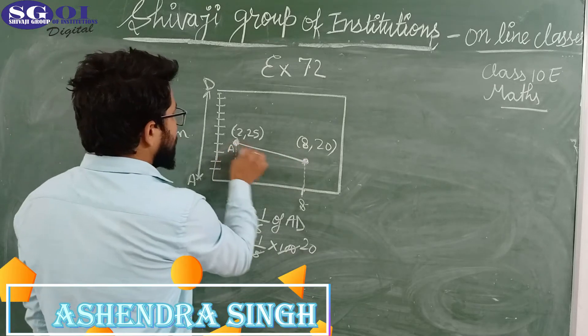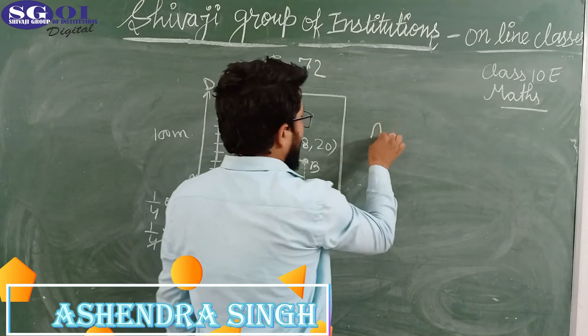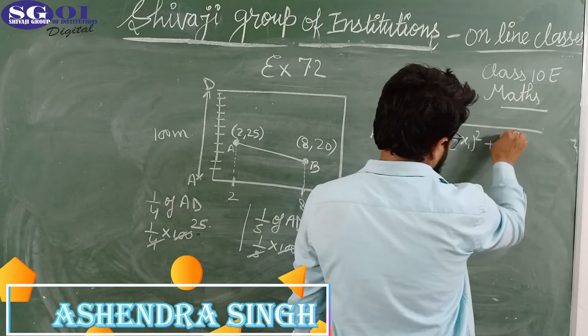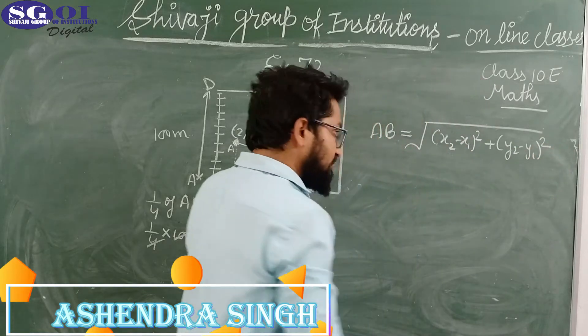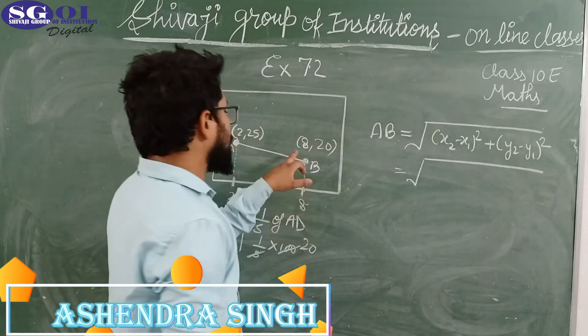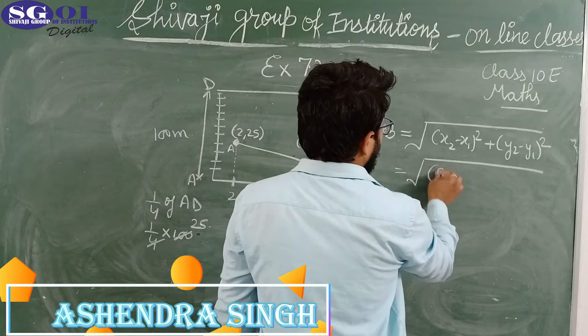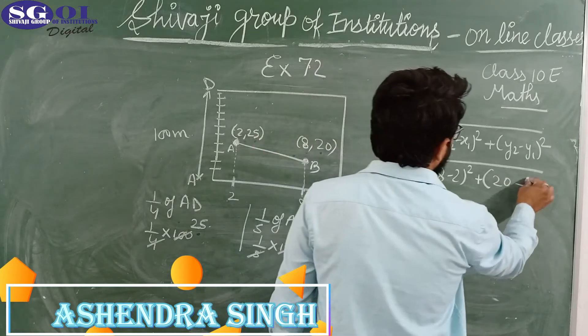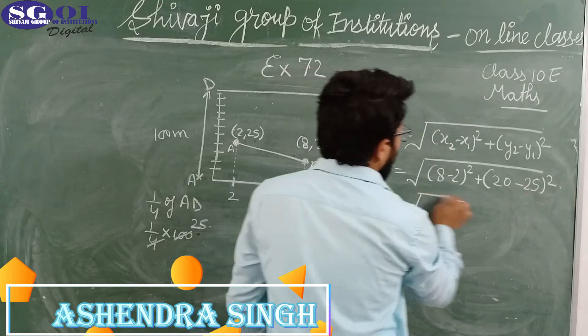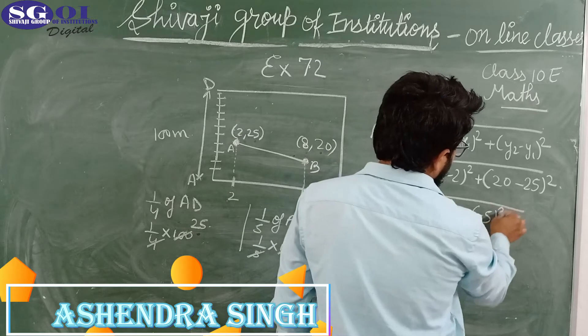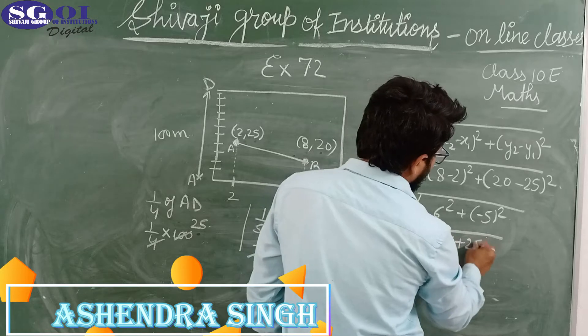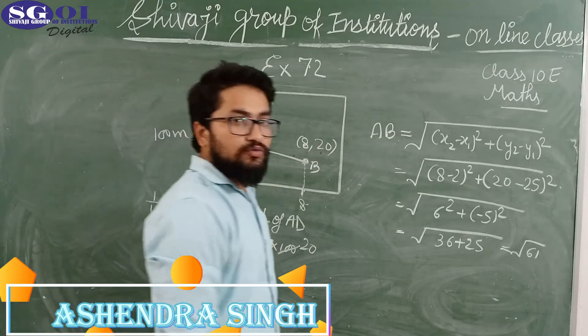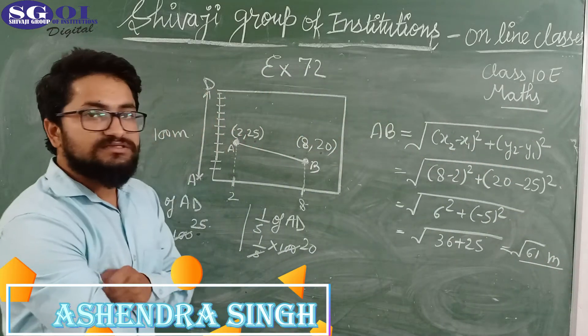Now we have to find out the distance between these two points AB. Distance formula: under root of (x2 minus x1) whole square plus (y2 minus y1) whole square. So x2 is 8 and x1 is 2. That's (8-2)² plus (20-25)² = √(36+25) = √61. So the distance between the two flags is √61 meters.